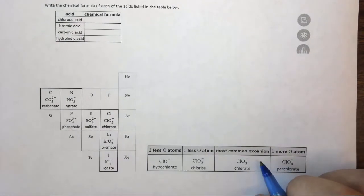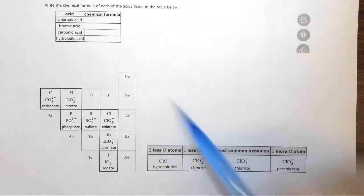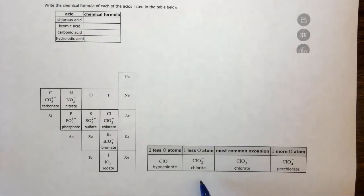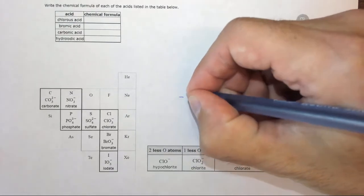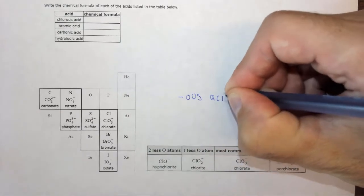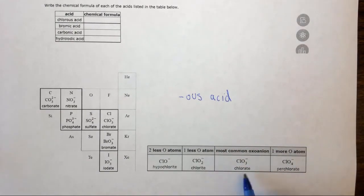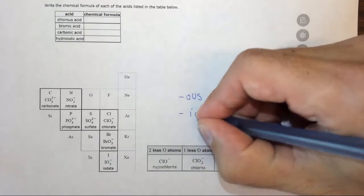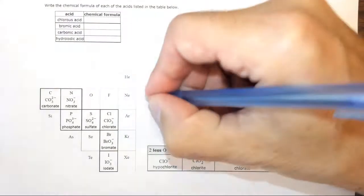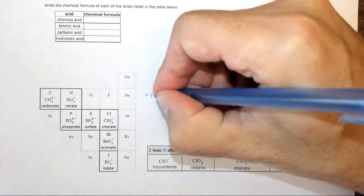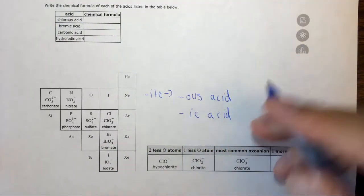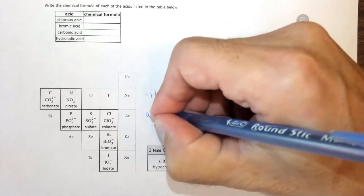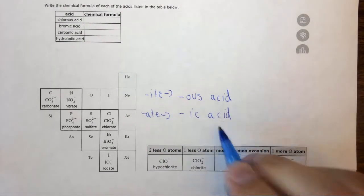The basic rules are that if the acid comes from an oxyanion with -ite in it, it's going to be an -ous acid suffix. If it comes from an oxyanion with -ate in it, it's going to be an -ic acid. So again, if it's -ite it becomes -ous acid. If it's -ate it becomes -ic acid.